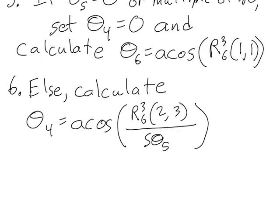In step six, which we do if theta five is not equal to zero or a multiple of 180, theta four is equal to the arc cosine of R36, the value that's in row two, column three, divided by the sine of theta five. You can understand now why we would not want to do this if theta five was equal to zero or a multiple of 180. In that case, the sine of theta five would be zero and we can't divide by zero. And so this is a calculation that we use only in the case that the sine of theta five is not equal to zero.